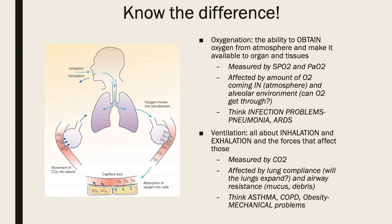There are two main functions within the respiratory system: oxygenation and ventilation. It's important to know the difference because when talking about respiratory problems, we need to identify — is it a problem of oxygenation or of ventilation? Oxygenation problems are about the ability to obtain oxygen from the atmosphere and get it to your organs and tissues. We measure this by looking at oxygen saturation using a probe on the patient's finger, and through an arterial blood gas we look at the PaO2 — the partial pressure of oxygen, effectively how much oxygen is in the artery.